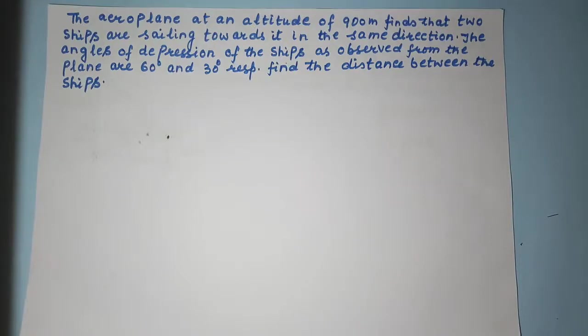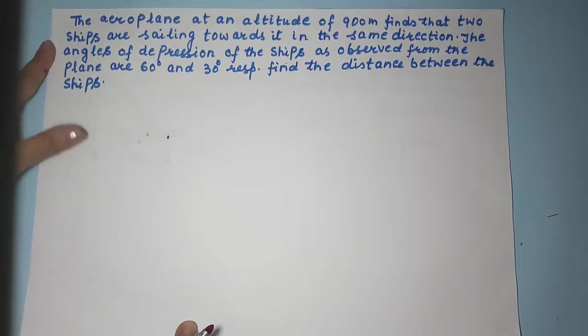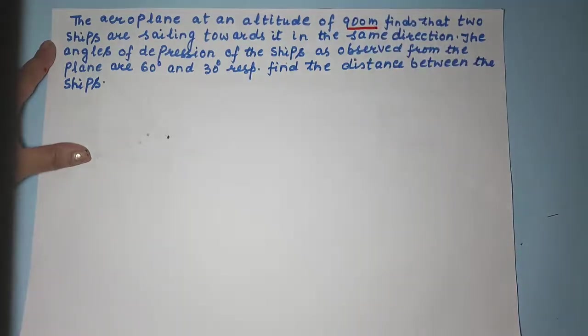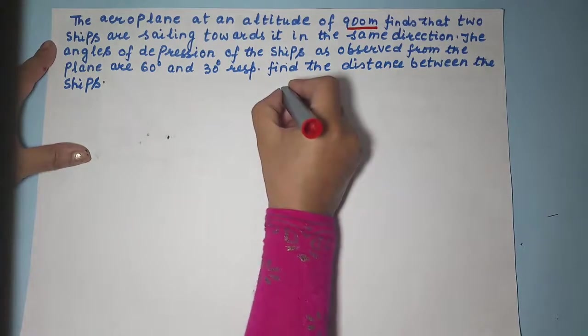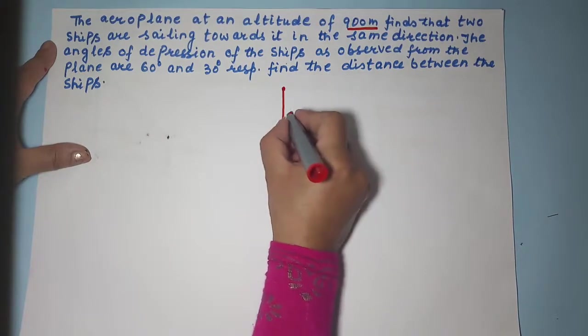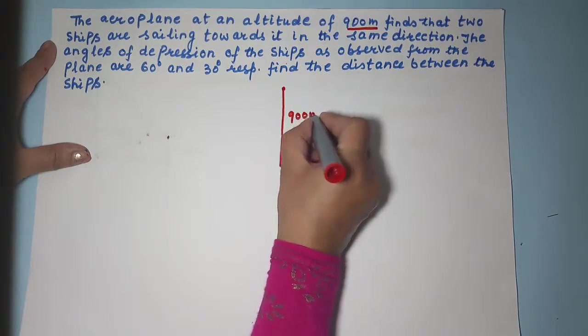So heights and distances. We have a question in which the aeroplane is at an altitude of 900 meters. What do we mean by altitude? Altitude means height. So an aeroplane is flying at a height of 900 meters from the ground level.